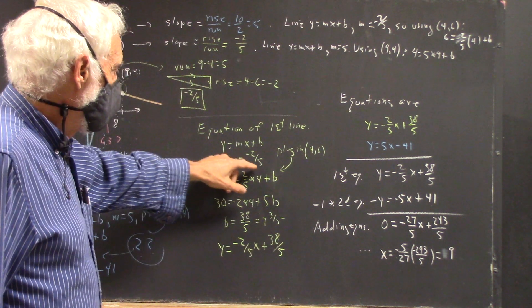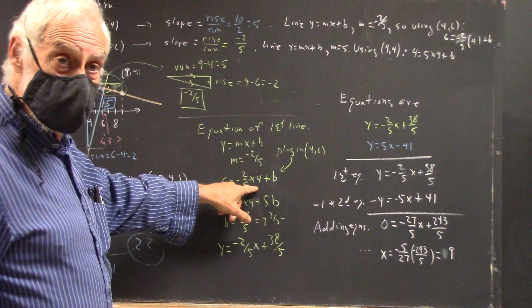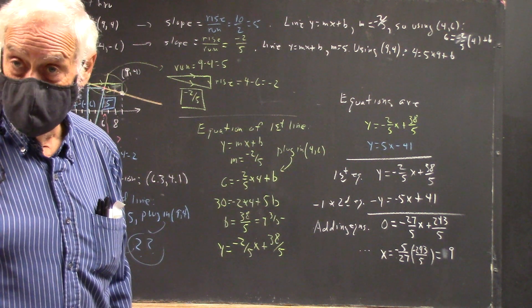Here, I used m equals negative 2/5 and the point (4, 6) to get this equation, which I easily solved for b, even though it's a little messy.